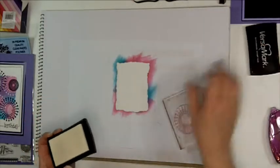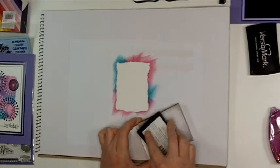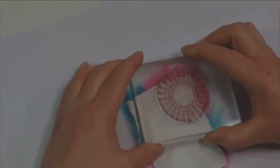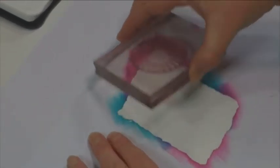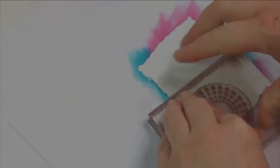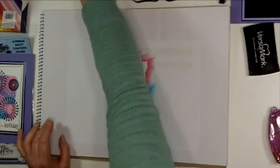We're using Versamark ink which is just a clear sticky embossing ink and you won't see very much when I stamp this at all. So we're going to randomly stamp through the aperture that we've created. And you can build this pattern up any way that you like really. As I say you won't see very much at all at this stage.